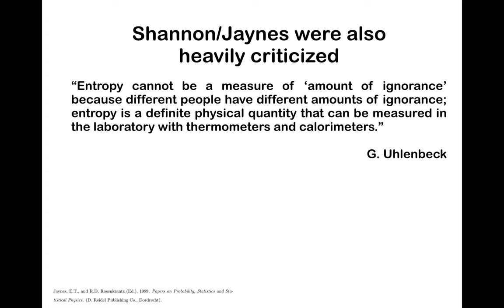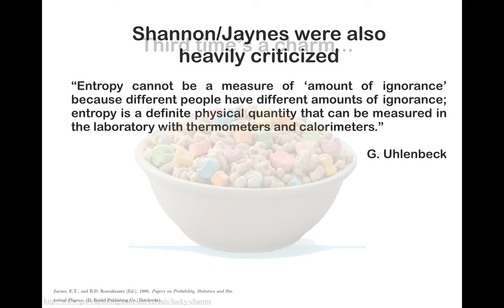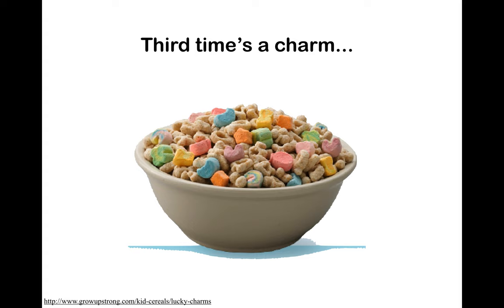Jaynes said: suppose we only have an average energy available to us, and we'd like to infer an entire distribution of energy. Let's maximize the uncertainty of the model given the known constraint — an average energy — from which pops out the Boltzmann distribution. Needless to say, Shannon and Jaynes were also very heavily criticized. Uhlenbeck — of the Uhlenbeck-Ornstein process, so no dummy — said: entropy cannot possibly be a measure of amount of ignorance because different people have different amounts of ignorance. Entropy is a definite physical quantity measurable in the laboratory with thermometers and calorimeters. Uhlenbeck, however, was misinterpreting Jaynes' work.